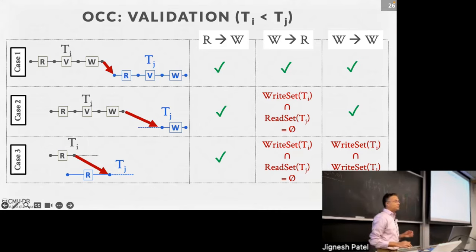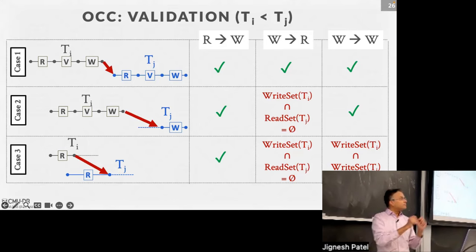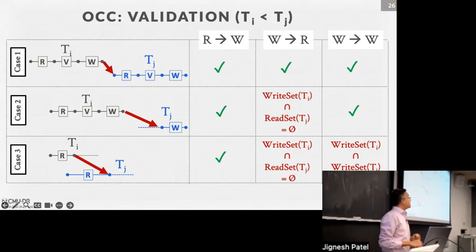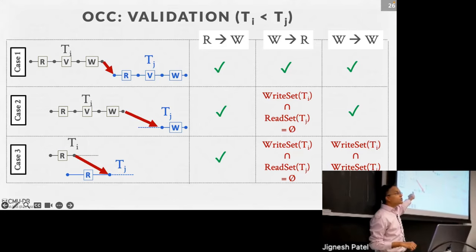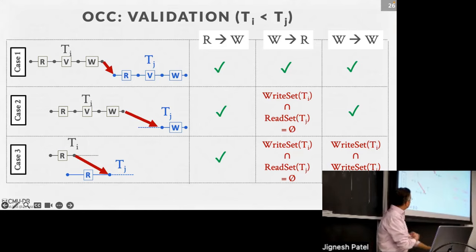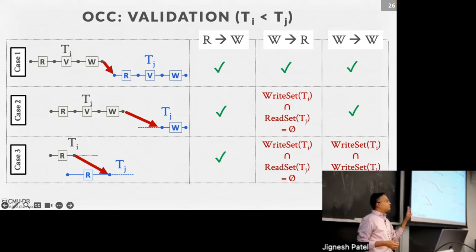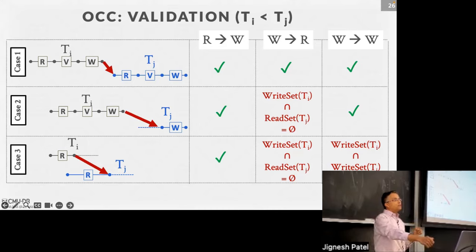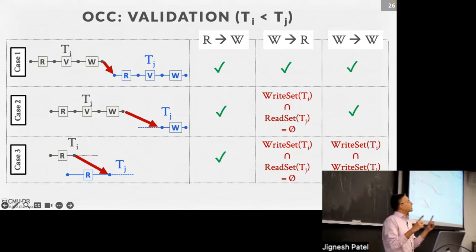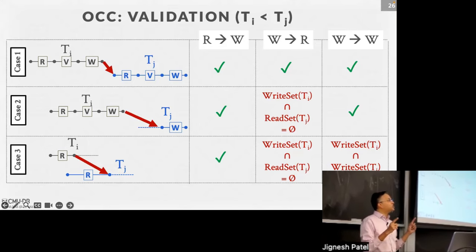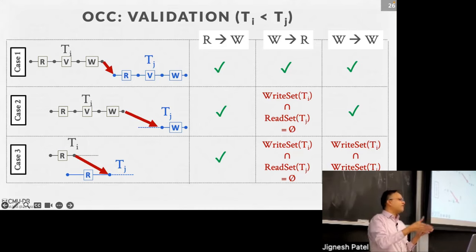We have a bunch to cover. I'm going to start by going back to the OCC stuff that we rushed through in the last class — there are a few things I needed to correct. I've updated the slides to fix one of the arrows in the figure. Let's understand why this works. Remember, there were three conditions, and when a transaction is in the validation phase, it checks against these three conditions. The ultimate check that needs to happen is between two pairs of transactions TI and TJ, and I is checking with all J's that are in the future. If everyone does that, everything works out.